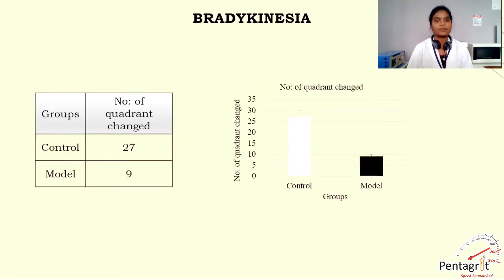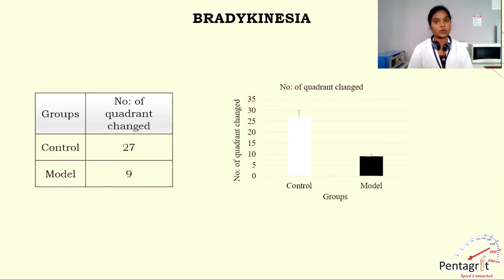Next is bradykinesia. Bradykinesia is known as slow movement and is one of the cardinal manifestations of Parkinson's disease. It is associated with an impaired ability to adjust the body's position. To study bradykinesia, the experimental fish tank was divided into four quadrants with solid lines and the number of quadrant changes for a given period of time was calculated. The study fish is introduced into the tank using a net and the number of quadrant changes is counted for three minutes. On the screen, the graph between control and model shows that the average quadrant change is decreased in the model compared to the control, indicating restricted movement.